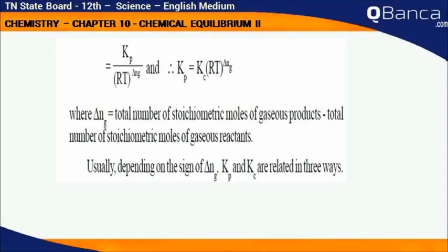Where delta Ng equals total number of stoichiometric moles of gaseous products minus total number of stoichiometric moles of gaseous reactants.